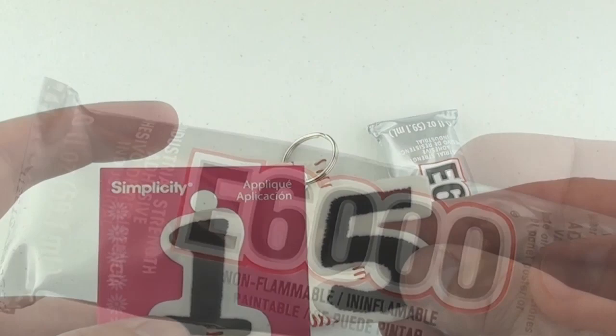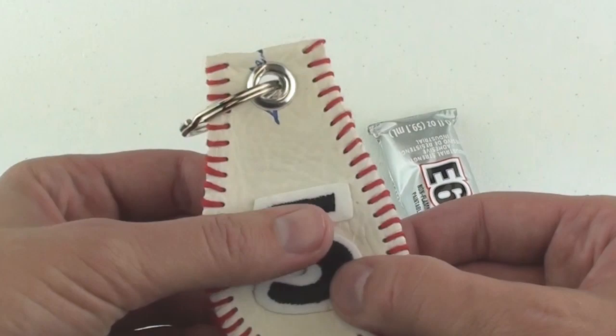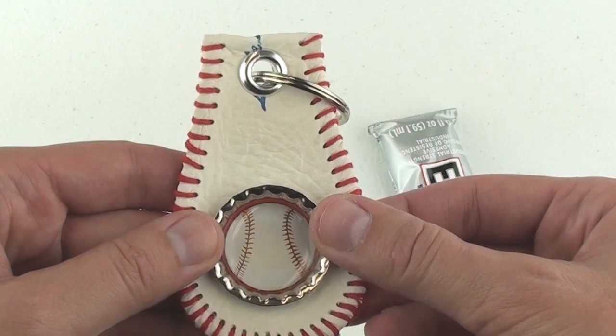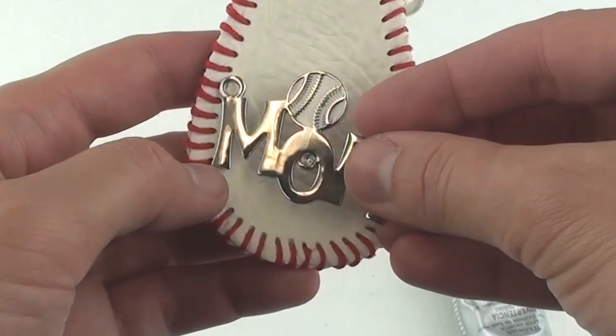Or, if you like bottle cap art, you can glue that on too. Or, I found this keychain in my local discount store. Pull off the keychain part and just glue on the baseball mom part. Or you can add some dots or buttons in your team's colors.